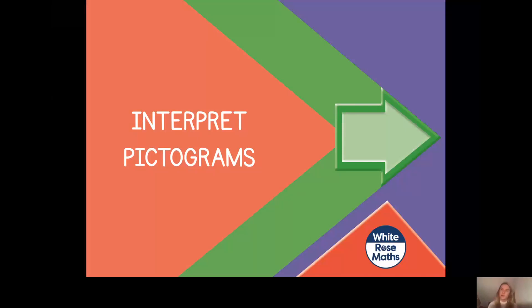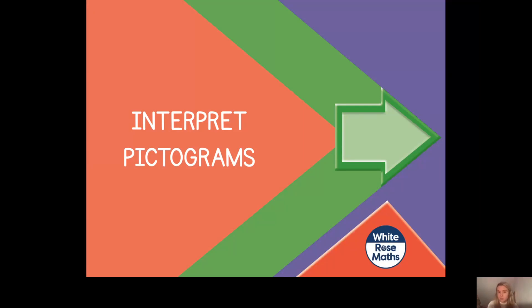Hello Year Two, welcome to today's maths lesson. In our maths lesson yesterday we looked at pictograms where one picture represented either five or ten items, and we had to look at the key to find out how many items one picture represented. Today we are going to be looking at interpreting these pictograms — answering questions about them — just like we did for pictograms where one picture represented one item and pictograms where one picture represented two items.